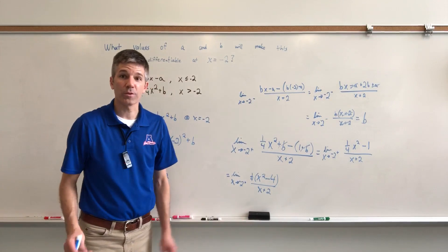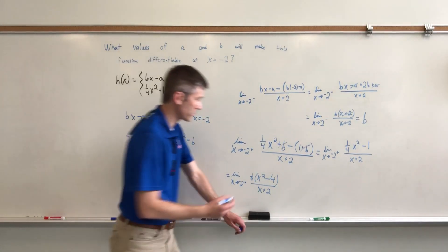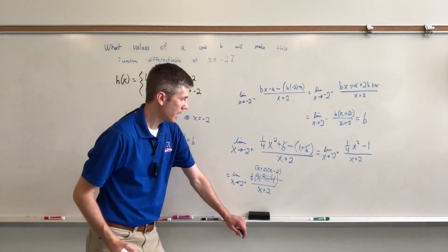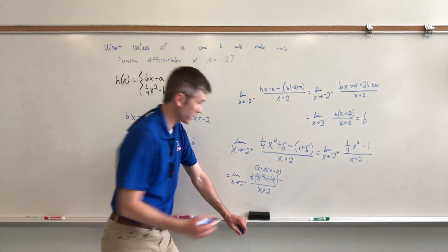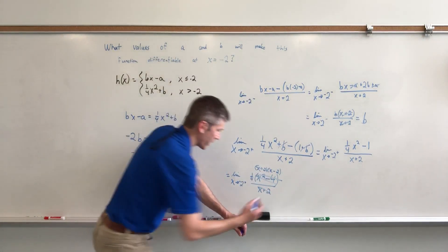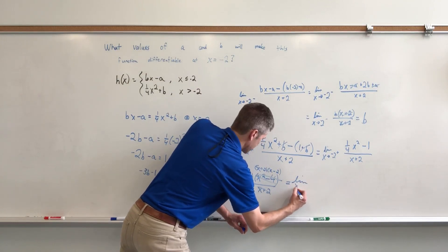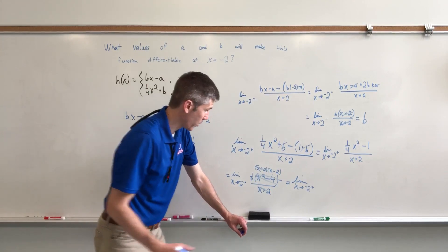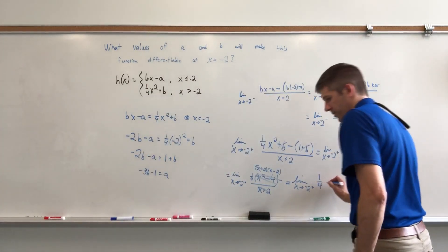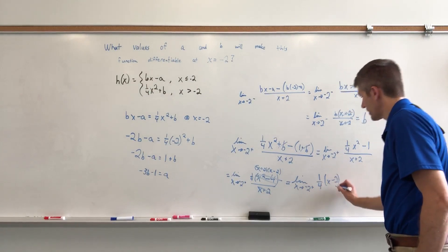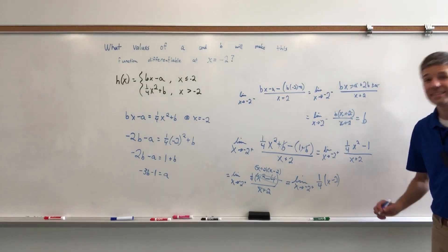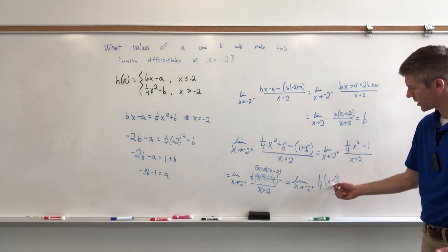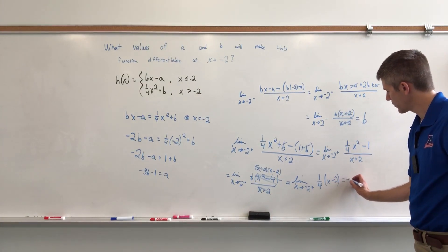And just to save myself a little bit of writing, I'm going to say that X squared minus 4 is really X plus 2, X minus 2. So that's gone now. And I can also cancel out the X plus 2s. Fun stuff. Now I have the limit as X approaches negative 2 from the right of one-fourth X minus 2. Can I plug a negative 2 in now? Yes, and I will. Negative 2 goes here, and that is going to be negative 2 minus 2, so negative 4. One-fourth times negative 4 is negative 1.